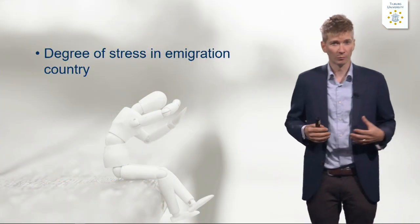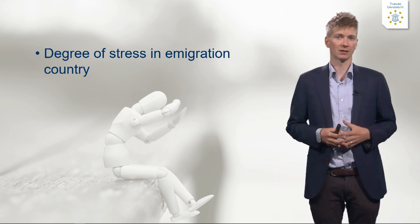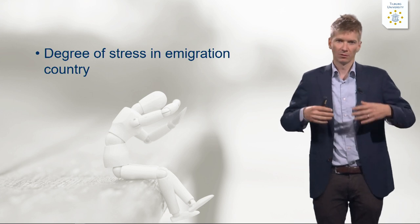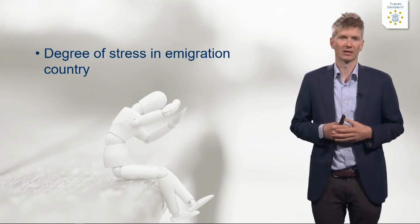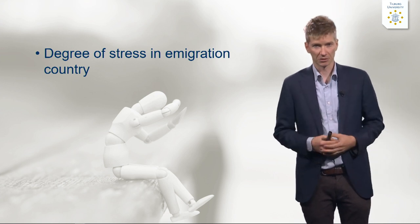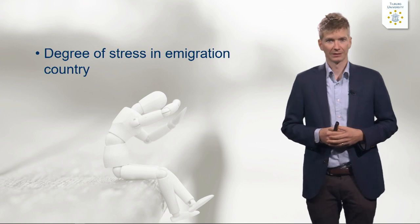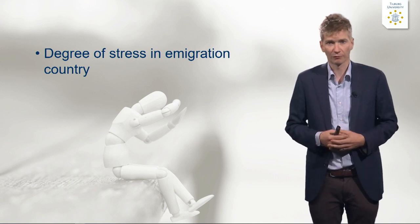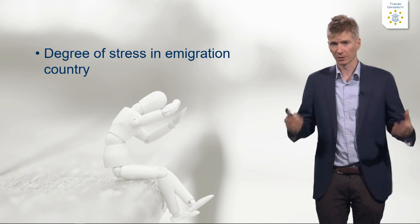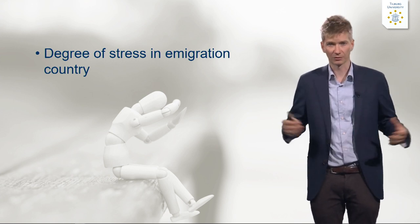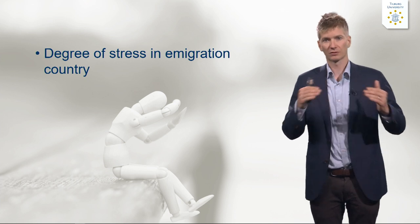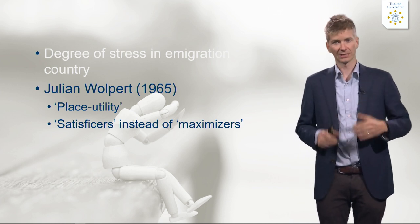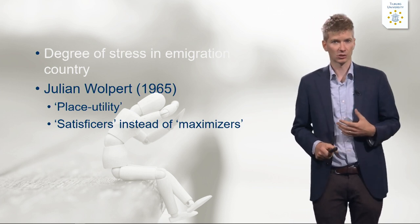Julian Wolpert specifically worked a lot on this behaviouralist approach to international migration. He indicated that people can experience certain degrees of stress in an emigration country — due to the economic situation, family situation, discrimination of a minority group, or sexual orientation. There is a certain threshold in this stress, and if you pass that threshold, you make the decision to move abroad.